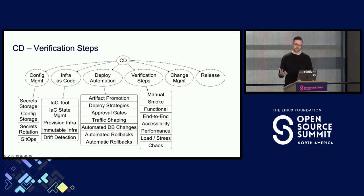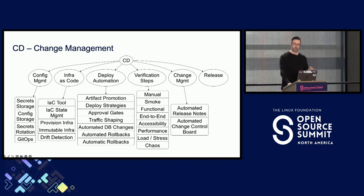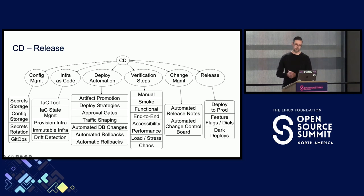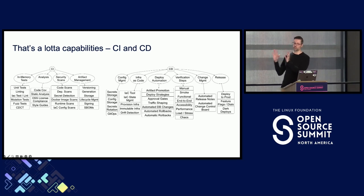We have verification steps — the various kinds of tests we would run once we're in a deployed environment. This is a counterpart to the in-memory tests we saw in CI. It doesn't specify we deployed to dev and do this test, deployed to stage and do this test — these are the capabilities we have for the various types of tests. For change management: how we deal with a change control board, and also automated release notes. We call out release and specifically getting into production, and also progressive deploys — for instance with feature flags, dark deploys, that sort of thing.